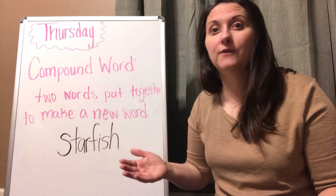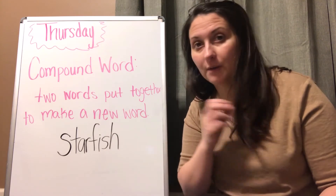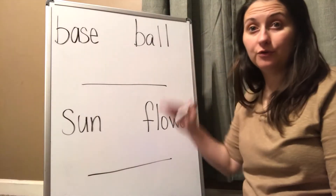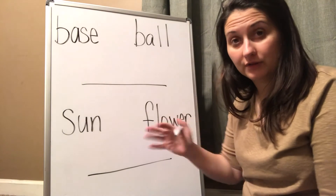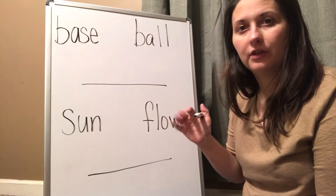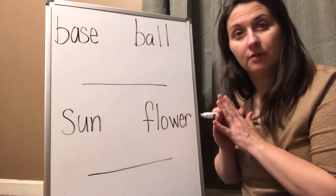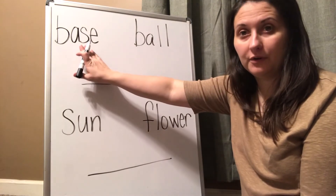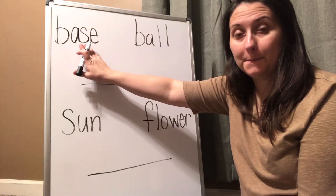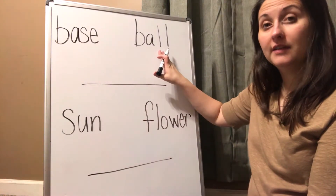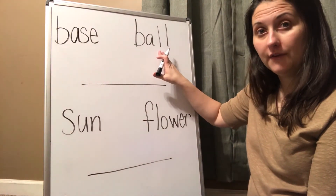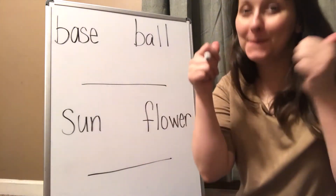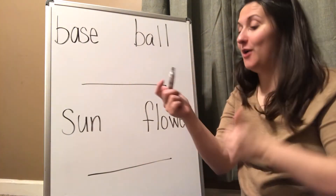I'm going to write a few more and then we're going to see if we can put those together and find out what they are. I have written two different sets of words and we are going to add them together to make compound words. The first word is base, and the second word is ball. If we put those together, we get — baseball. Very good.